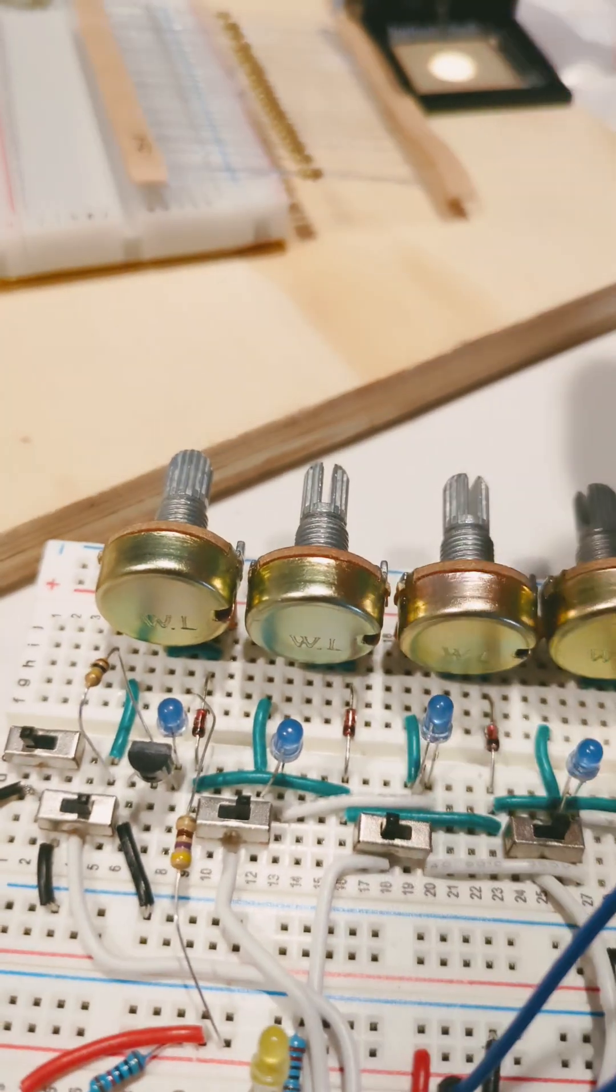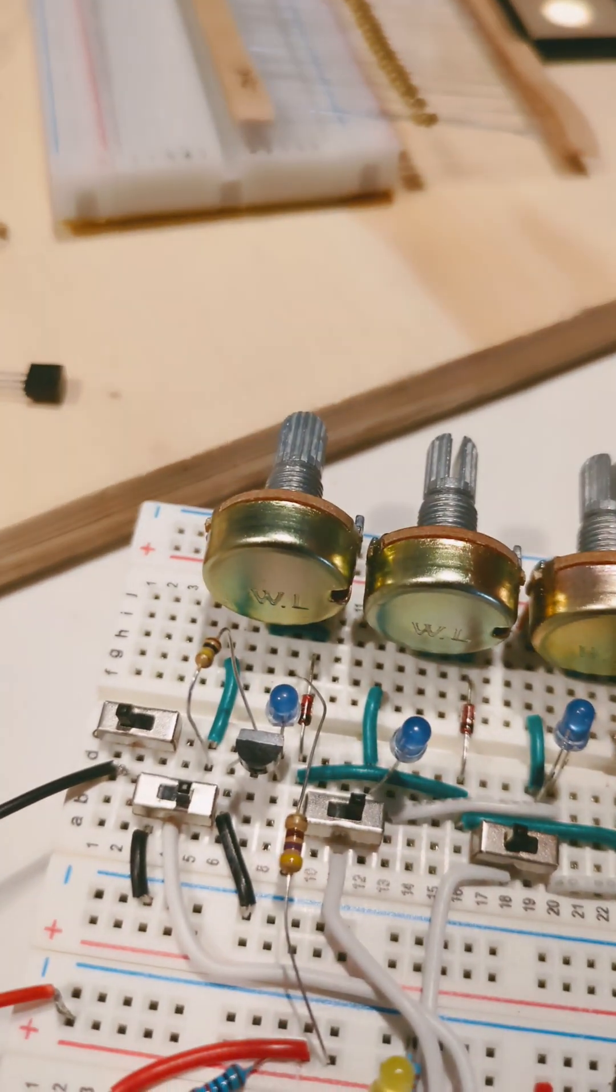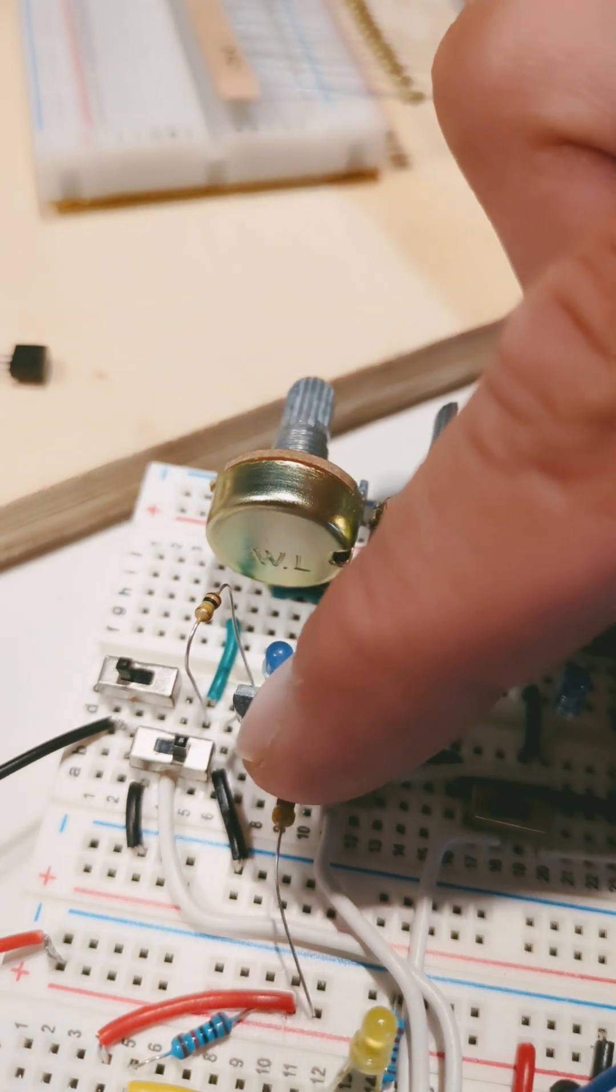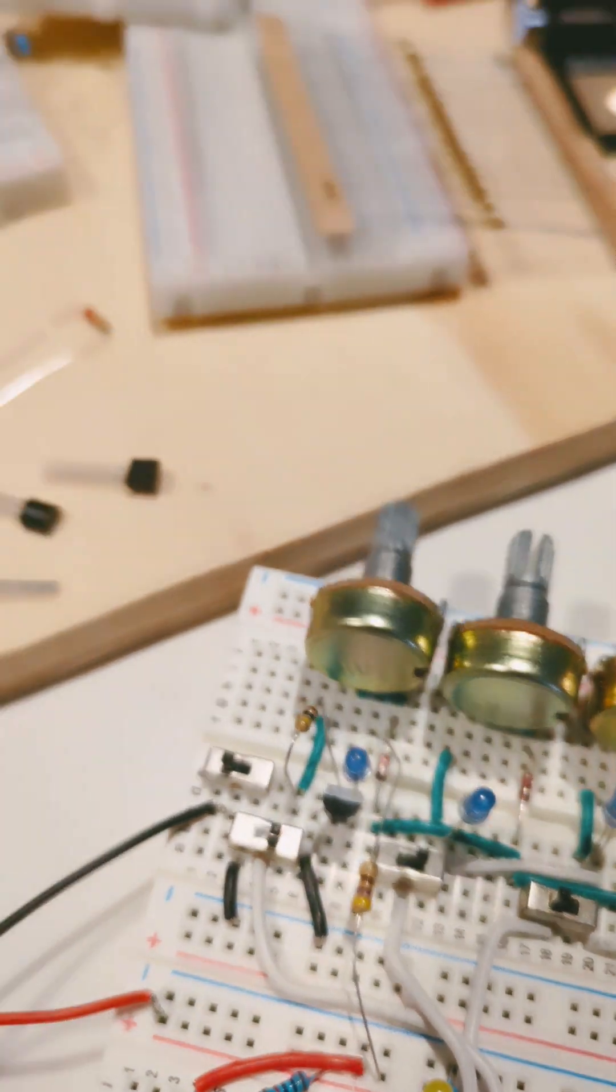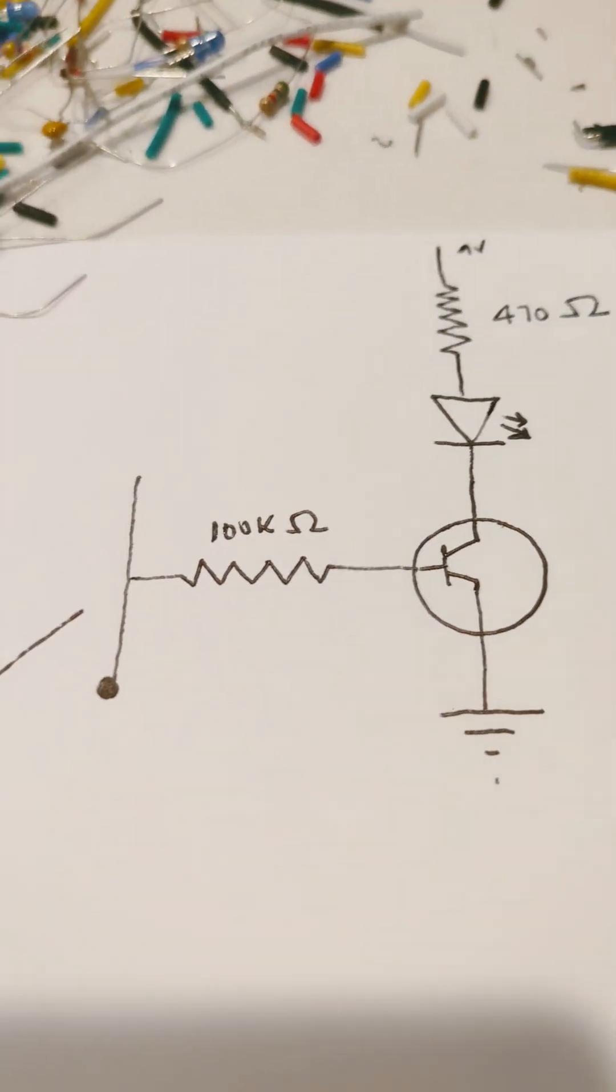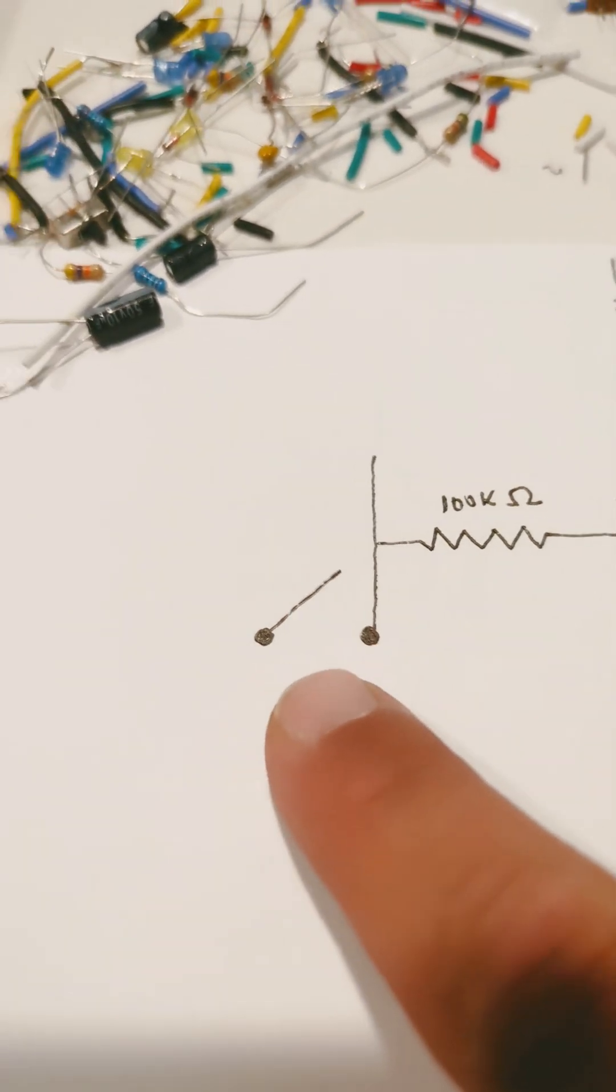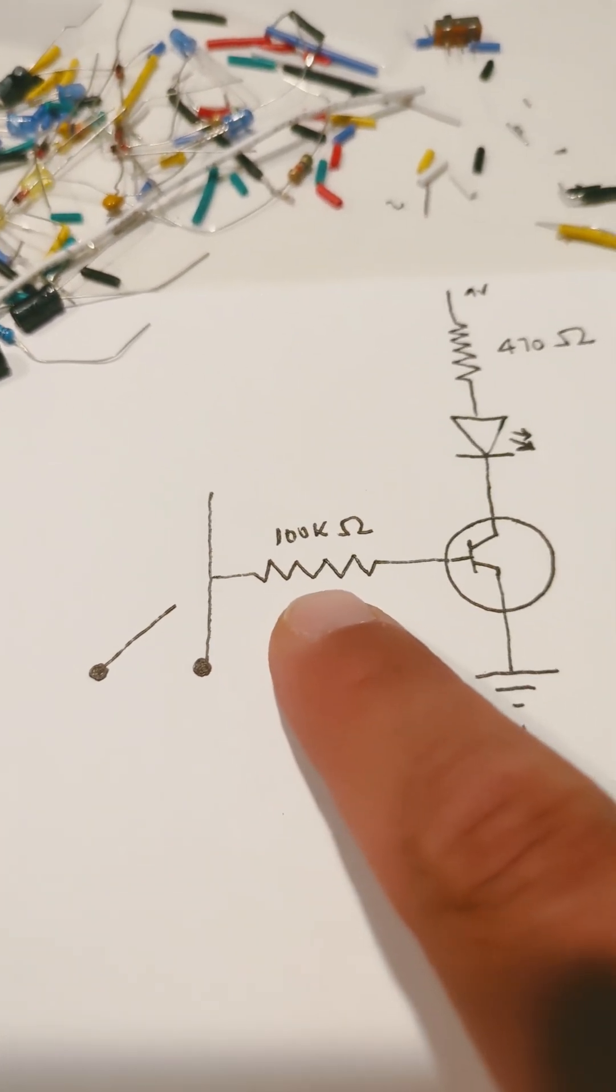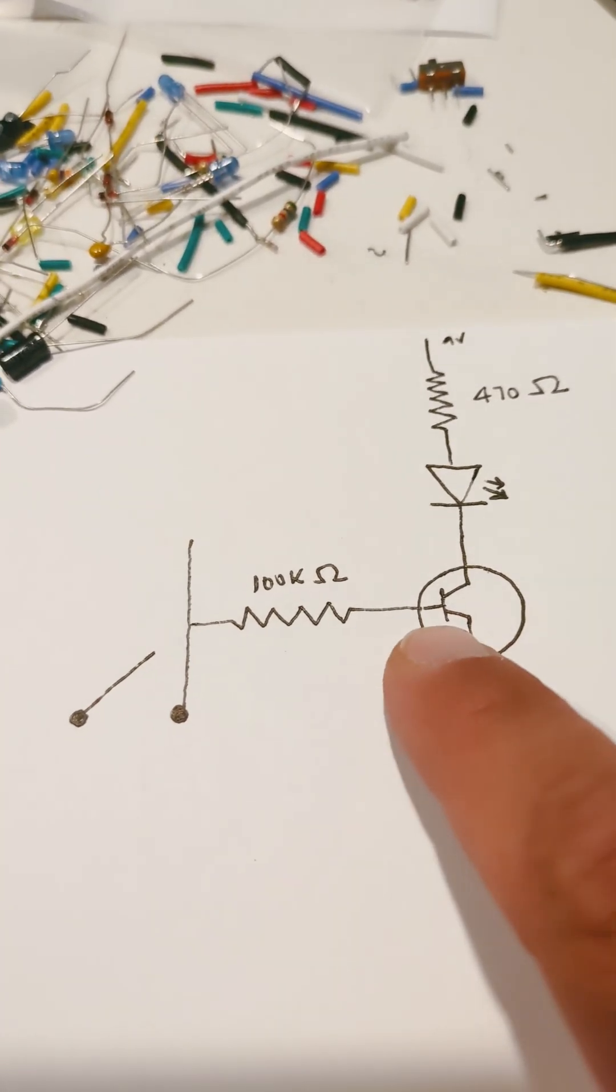So we're going to run them through a transistor instead, and it looks like this: where that switch runs through a 100K ohm resistor into the base of the transistor.